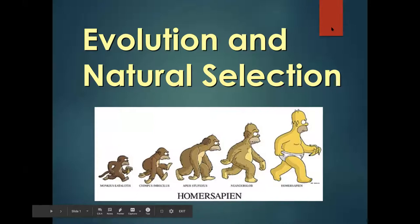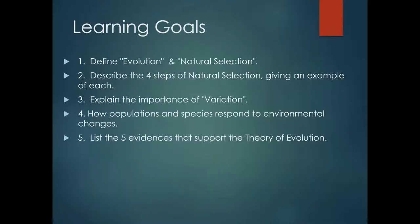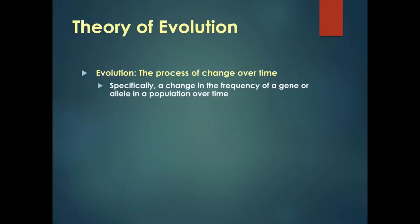Evolution and natural selection. Our goals are: define evolution and natural selection, describe the four steps of natural selection with examples, explain the importance of variation, understand how populations and species respond to environmental changes, and list five pieces of evidence supporting the theory of evolution. The theory of evolution is the process of change over time — especially a change in the frequency of a gene or allele in a population over time.